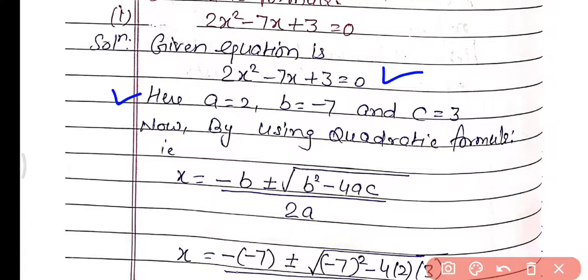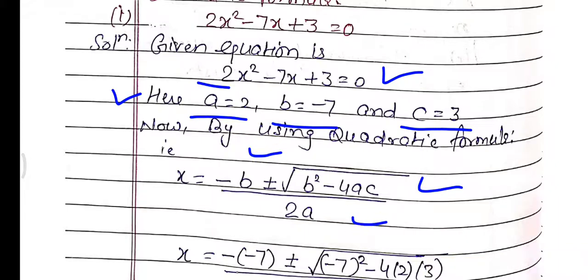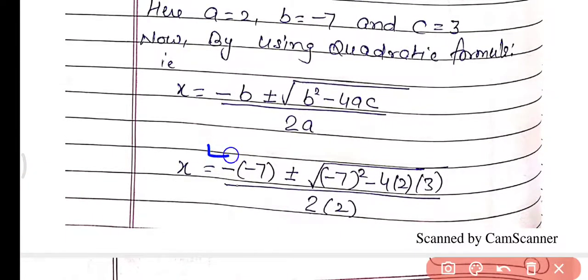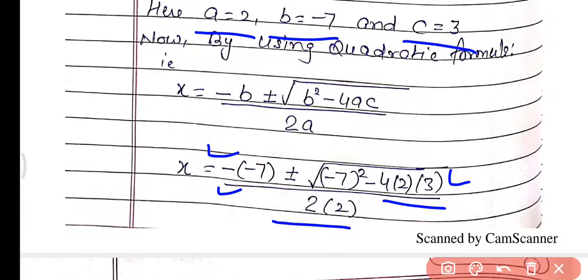Write down the coefficients: a = 2, b = −7, and the constant term c = 3. Now by using the quadratic formula, x = (−b ± √(b² − 4ac)) / 2a. Put all the values into the formula: x = −(−7) ± √((−7)² − 4 × 2 × 3) / (2 × 2).